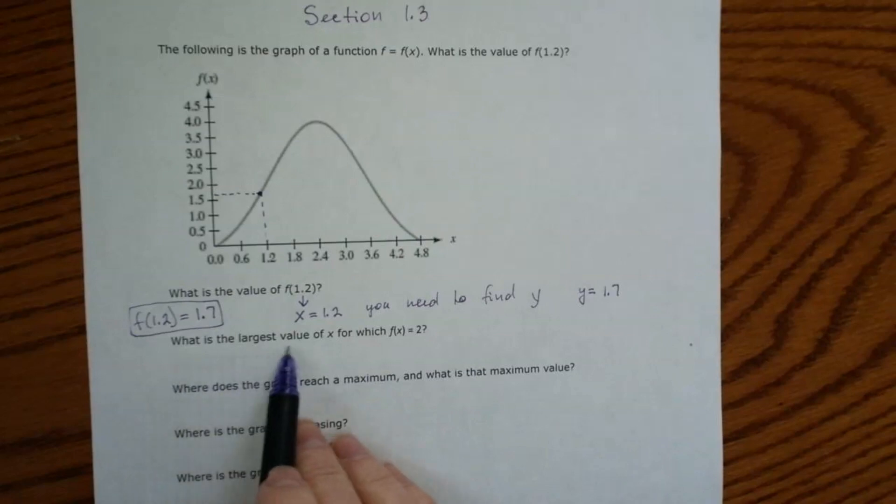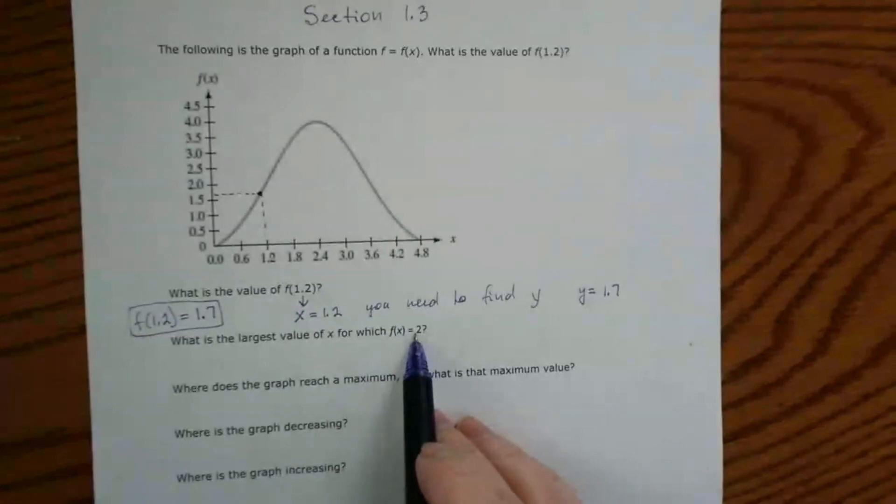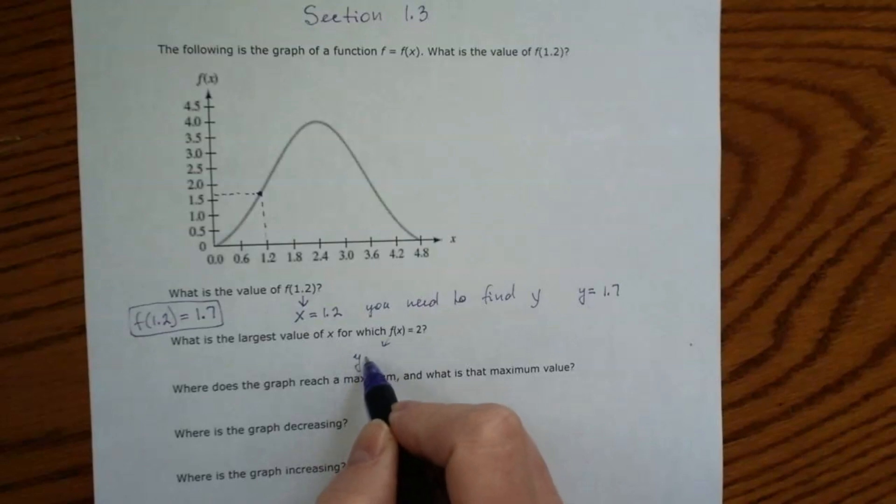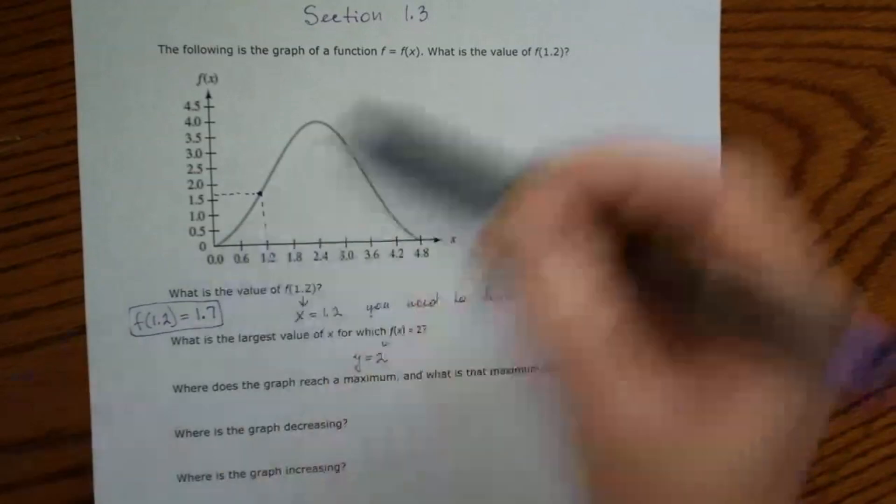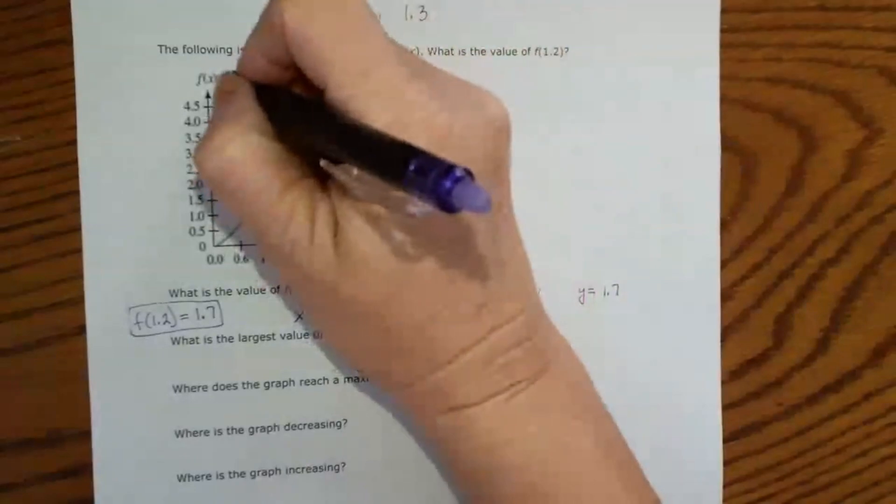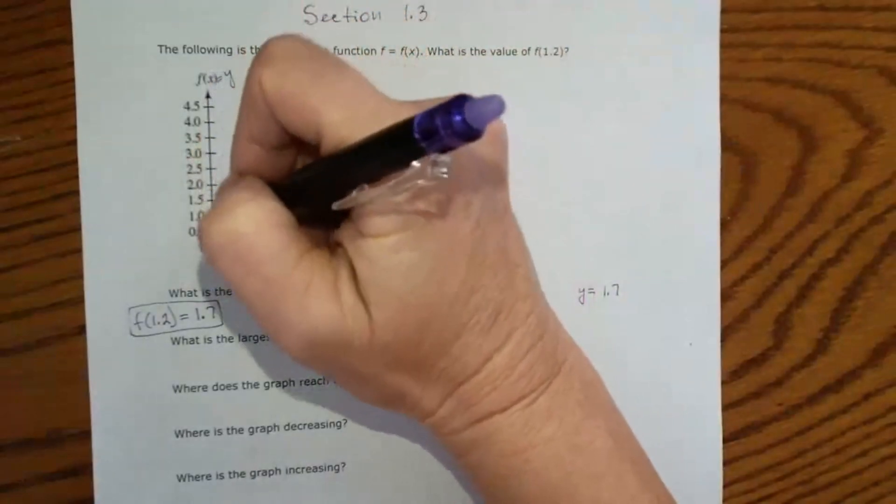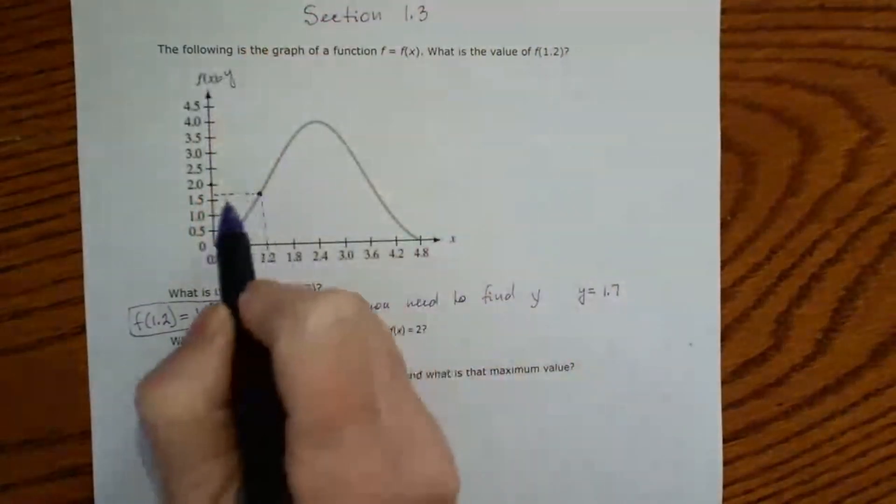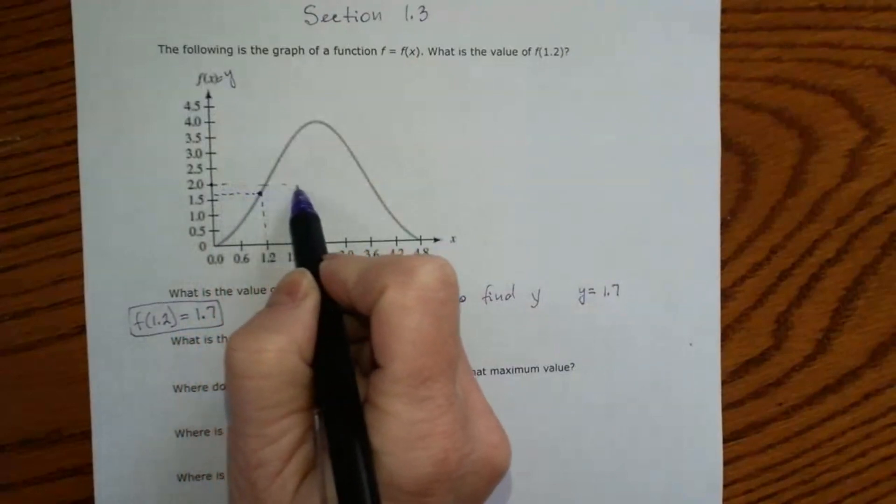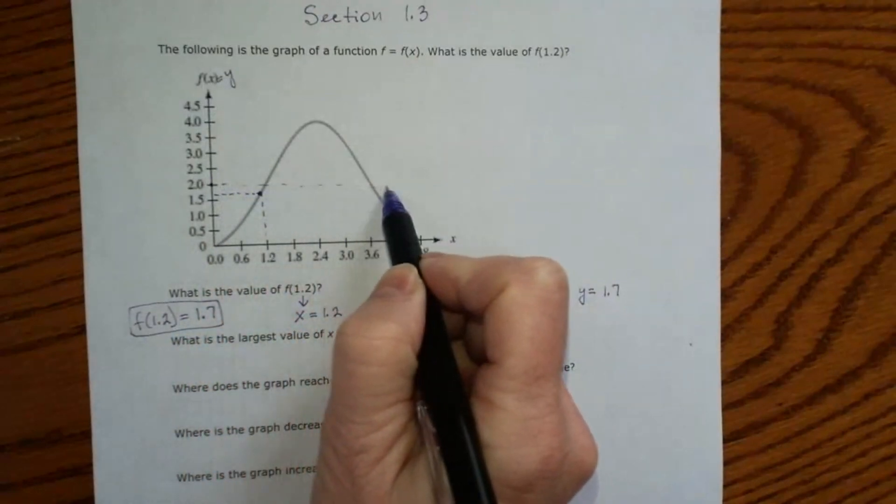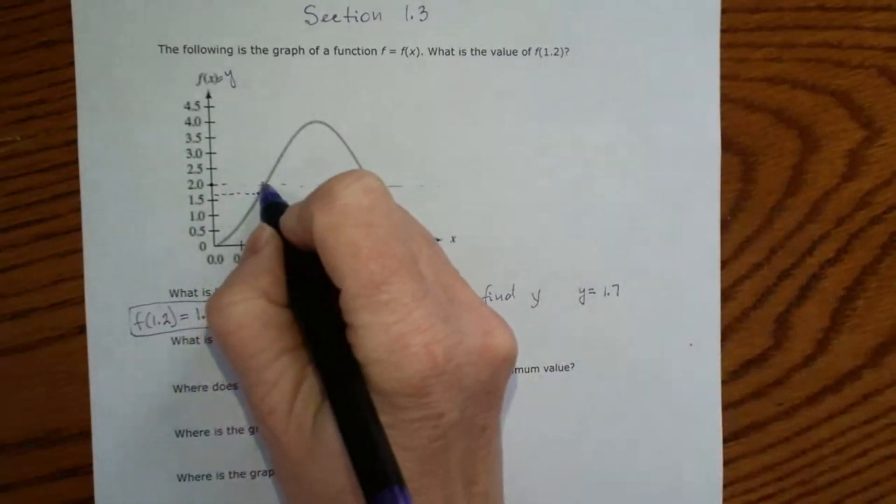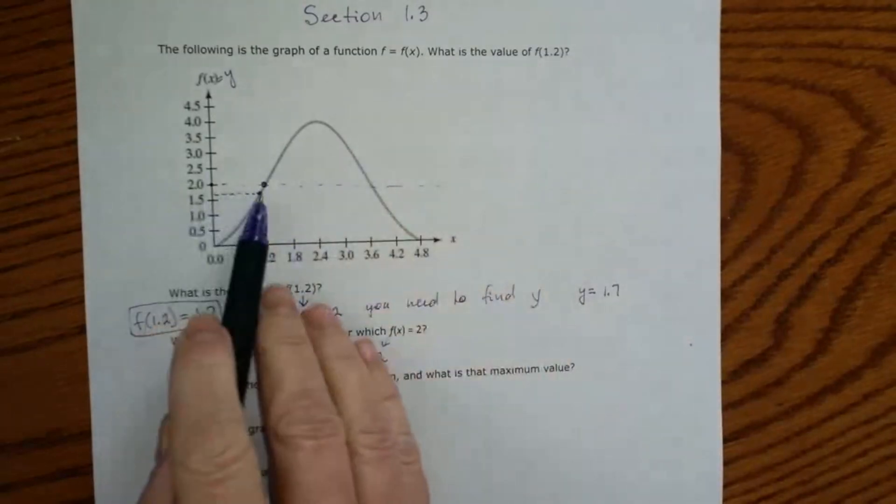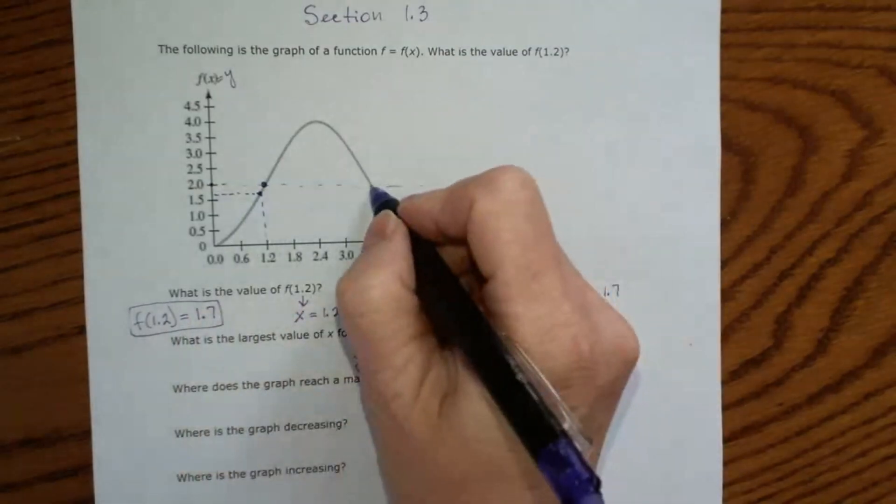What is the largest value of x for which f of x is equal to 2? f of x equal to 2 means that y is equal to 2. y is exactly the same as f of x and it's the vertical axis. So this is the horizontal axis. So you have to draw a horizontal line and look at the points where this horizontal line intercepts with the graph.